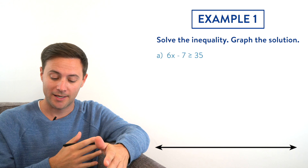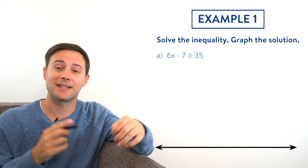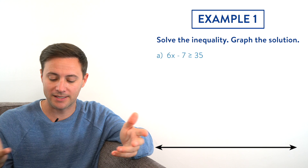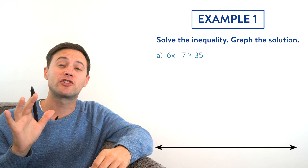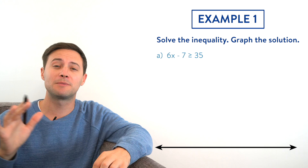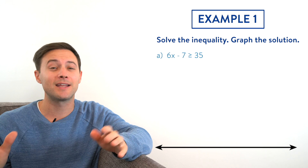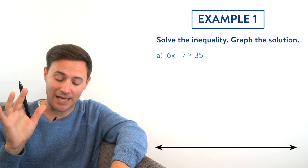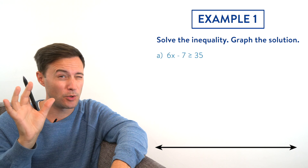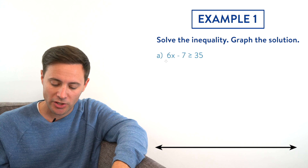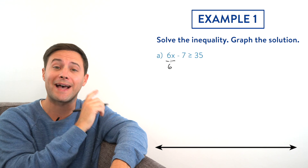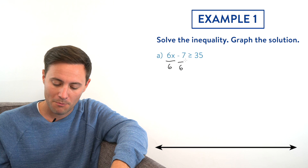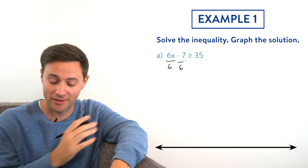Today we're solving two-step inequalities. With two-step inequalities we're going to solve them exactly the same way we would two-step equations: try to get the variable alone, anything you do to one side you have to do to the other, use inverse operations. The one thing we need to remember when dealing with inequalities is if any time we multiply or divide both sides by a negative number, we need to switch the inequality symbol. That's the main thing to remember — everything else should be the same.